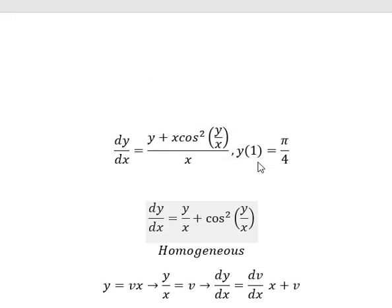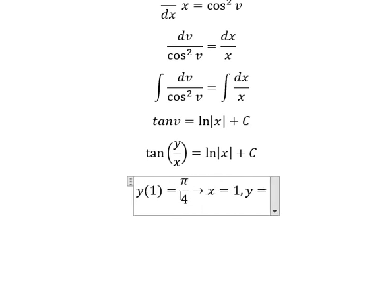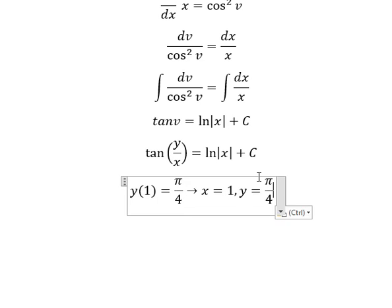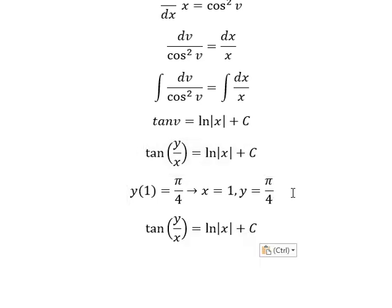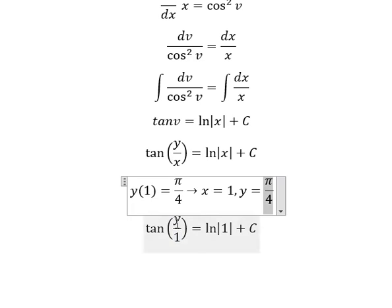Next we apply the initial conditions. When x equals one, y equals π/4. We need to find C. So we put x equals one and y equals π/4 into the equation.